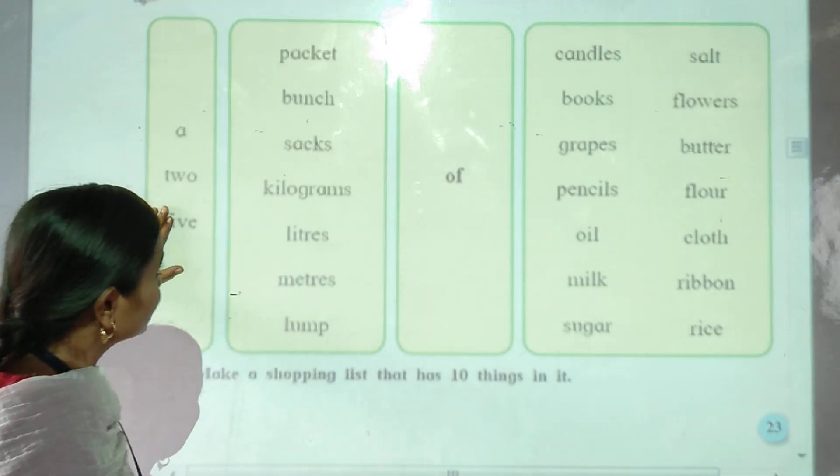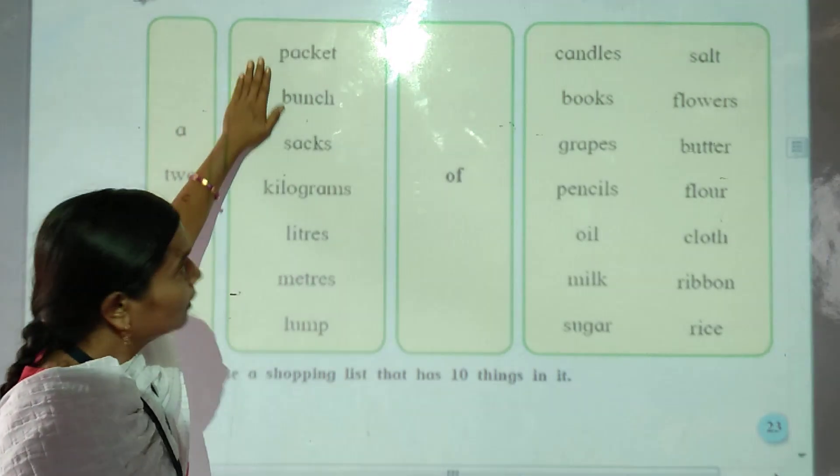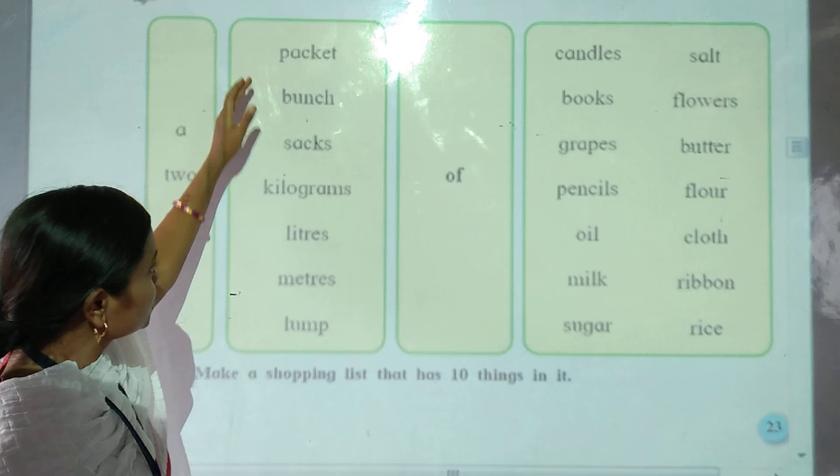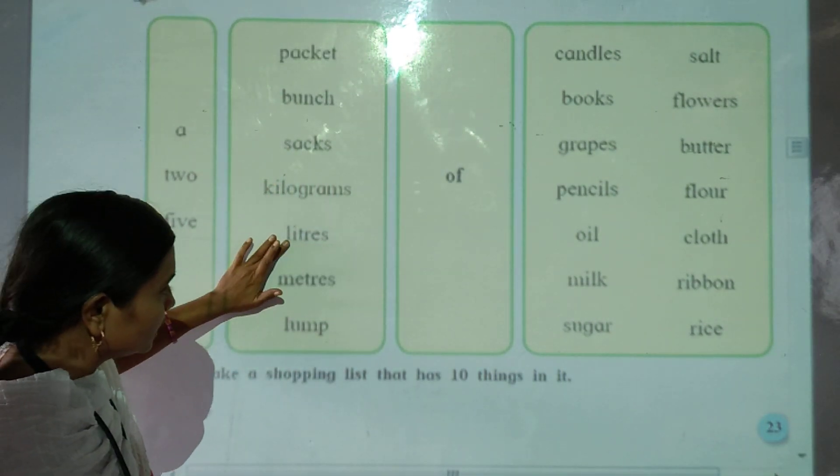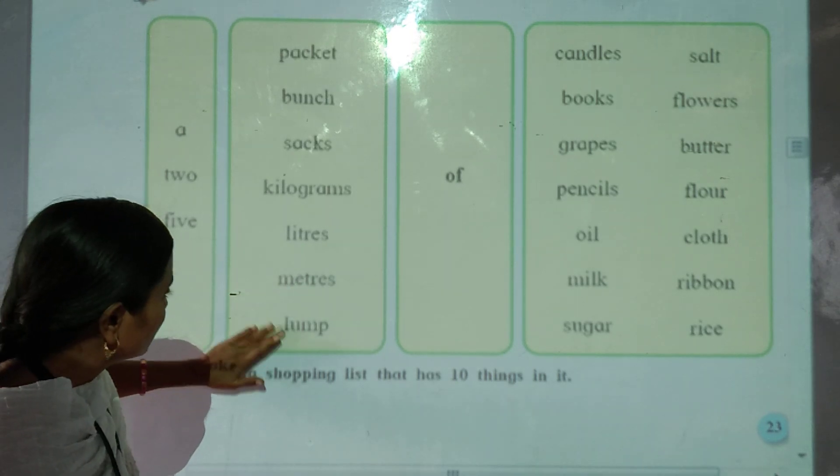The next one is pocket, the package means the bunch. Socks, kilograms, liters, meters, and lump.